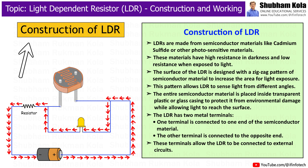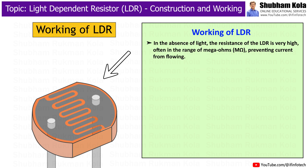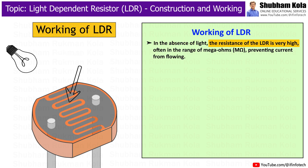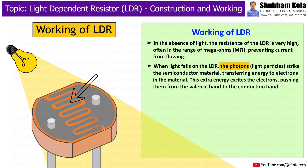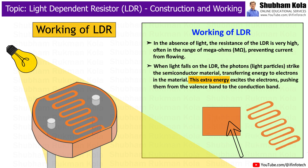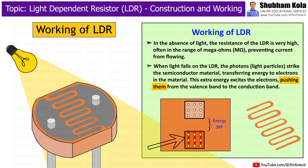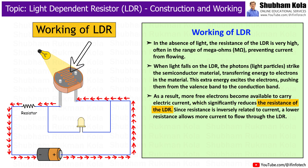Now let's move on to how the LDR works. In the absence of light, the resistance of LDR is very high, often in the range of megaohms, preventing current from flowing. When light falls on the LDR, the photons strike the semiconductor material, transferring energy to the electrons in the material. This extra energy excites the electrons, pushing them from the valence band to the conduction band. As a result, more free electrons become available to carry electric current, which significantly reduces the resistance of the LDR.